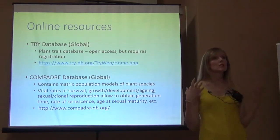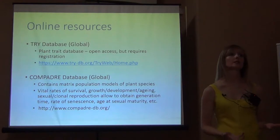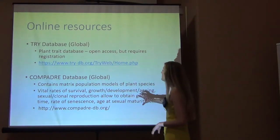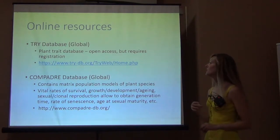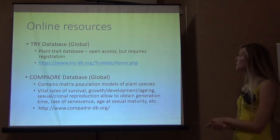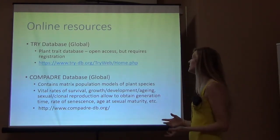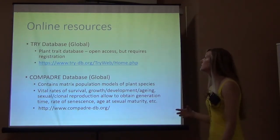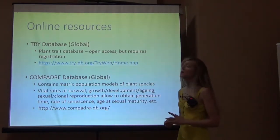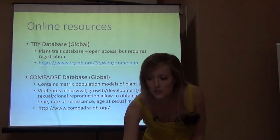So these are some online global resources where you can access species traits. Town already talked about the Compadre database, which has a bunch of plant trait data — survival rates, growth, development, aging, how long plants live, reproduction rate, age at maturity. The TRI database is also global and provides species trait data for plants.